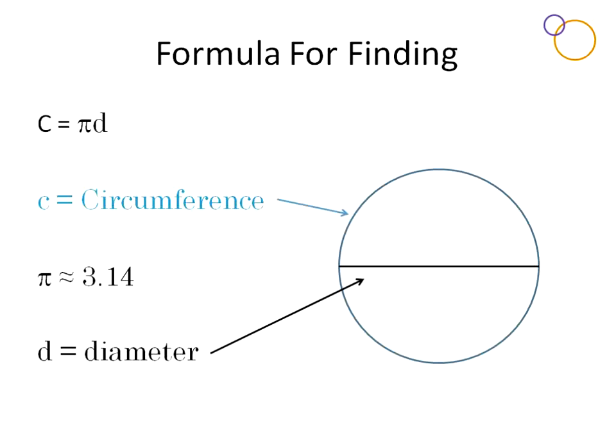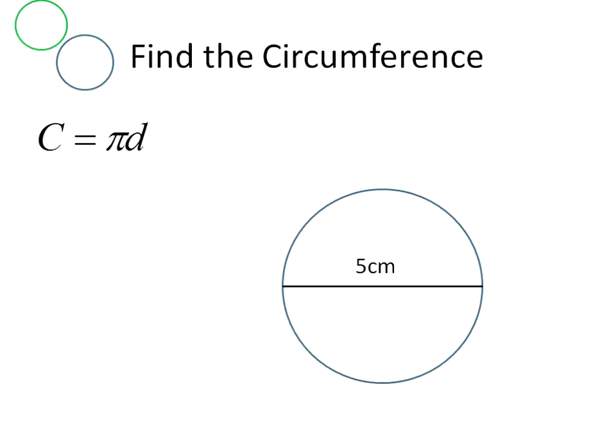So here's a circle that we have. We know the diameter is 5 centimeters. We're asked to find the circumference. What we're going to do is substitute what we know into our equation. We'll just leave the pi symbol as the pi symbol for now and just change the diameter to being 5.